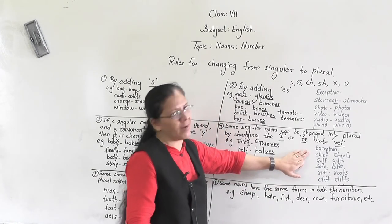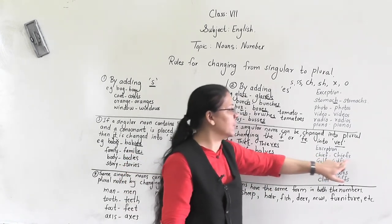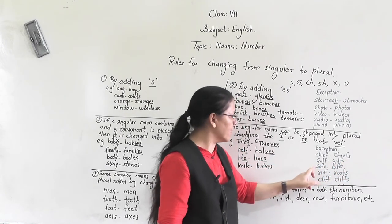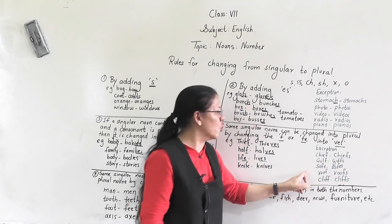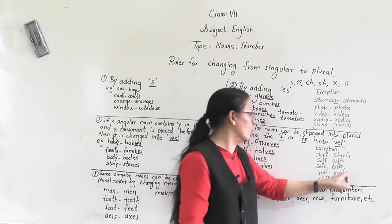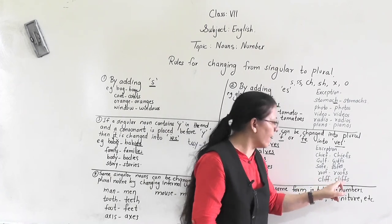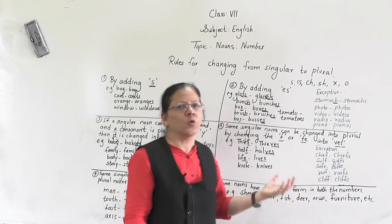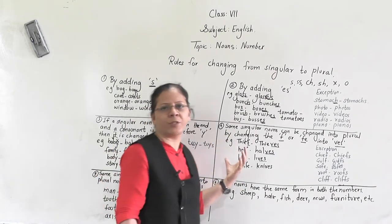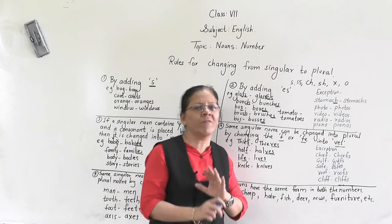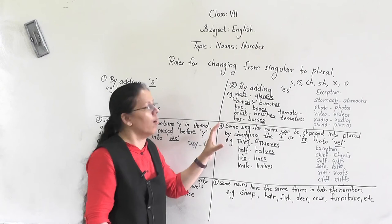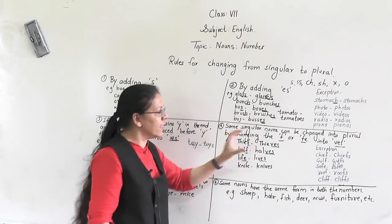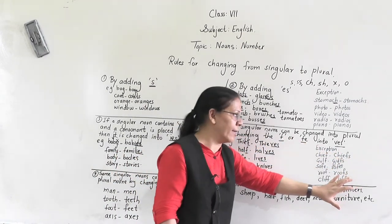But here also, my dear children, we have some exceptions to the rule. These are some exceptions: chief becomes chiefs, gulf becomes gulfs, safe becomes safes, roof becomes roofs. These words are exceptions — they don't follow the 'f/fe to ves' rule. So these words you have to keep in mind.